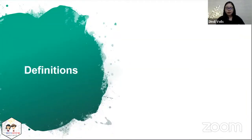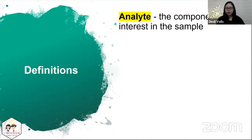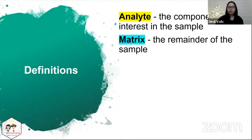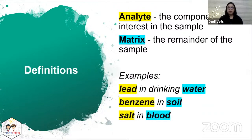Let me introduce some definitions that you will hear all throughout the presentation. Analyte is the component of interest in the sample, and matrix is the remainder of the sample. Here are some examples — everything highlighted in yellow is your analyte, and everything highlighted in blue is the matrix.